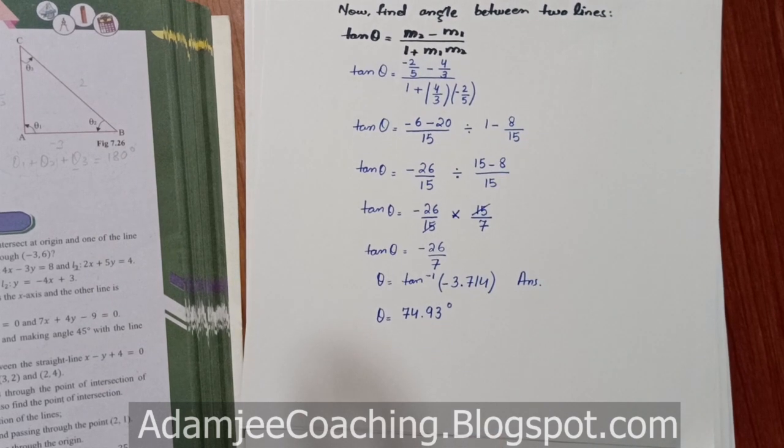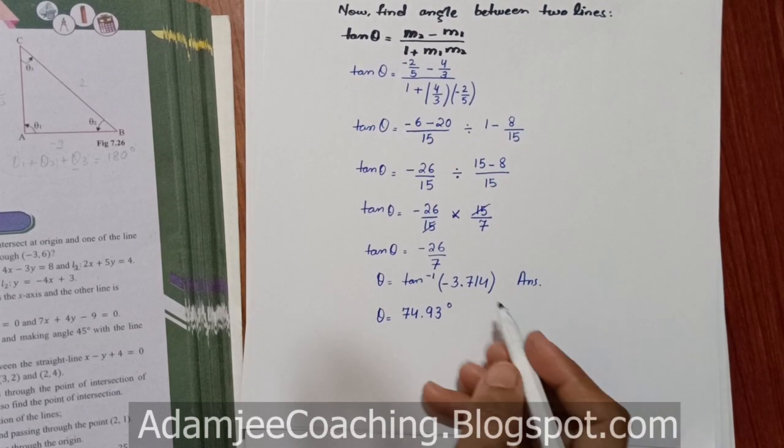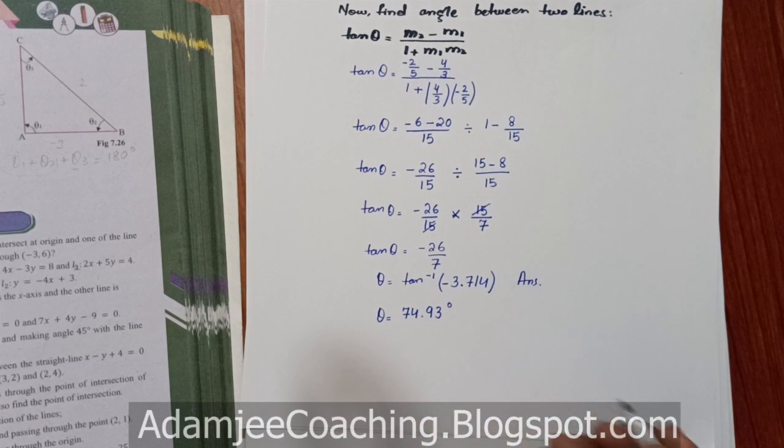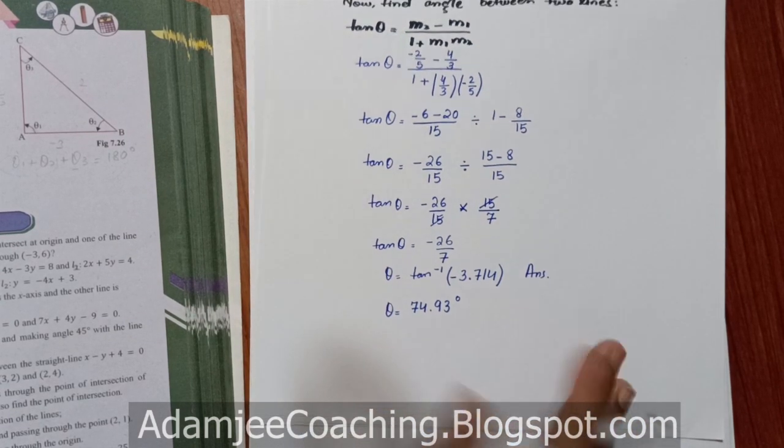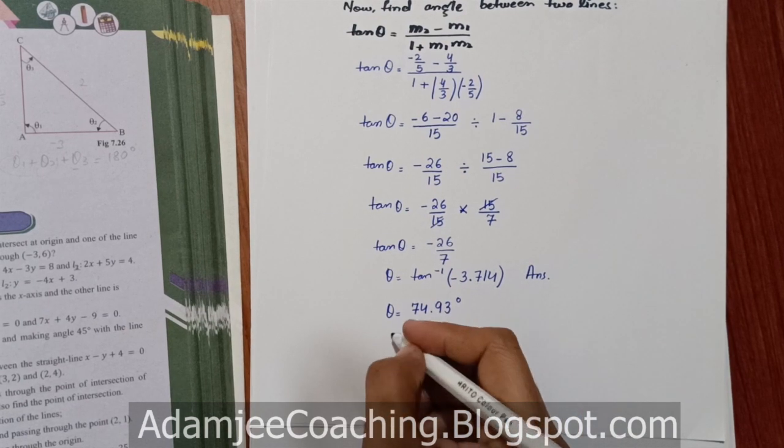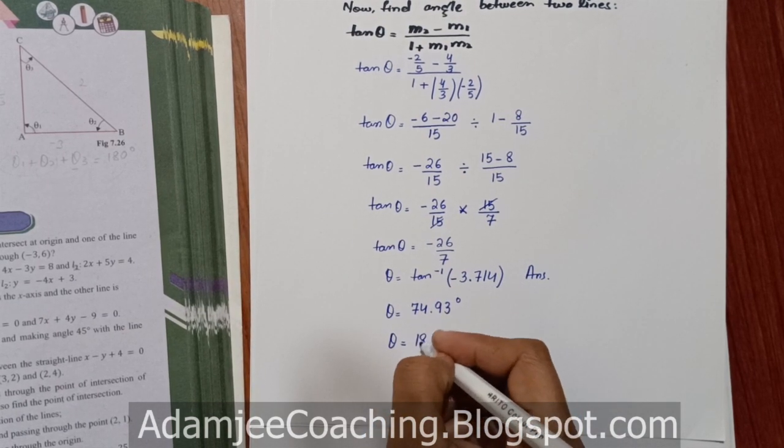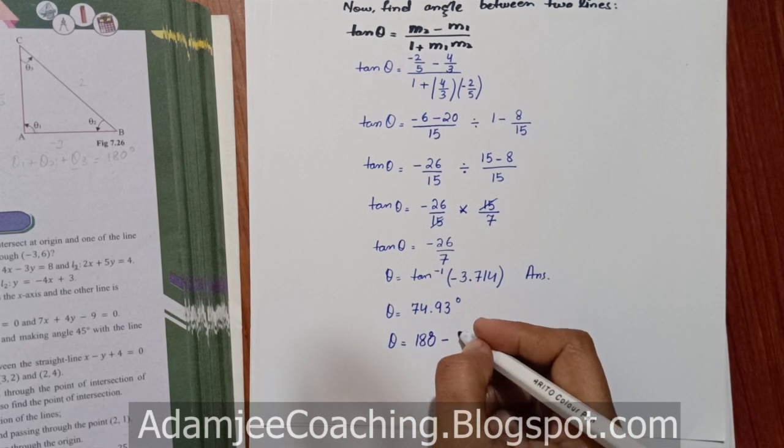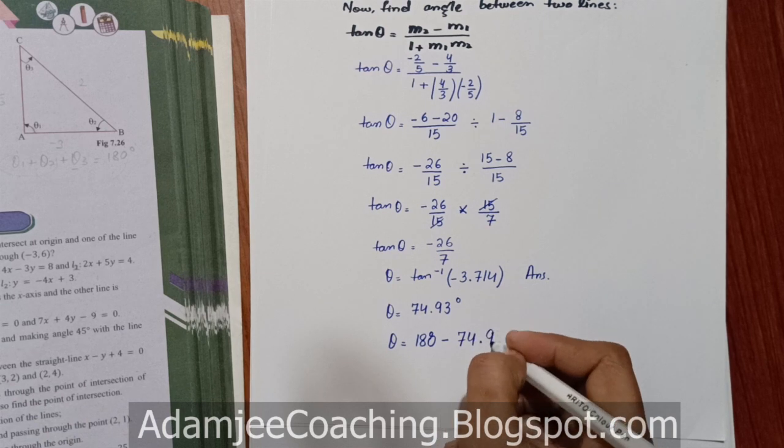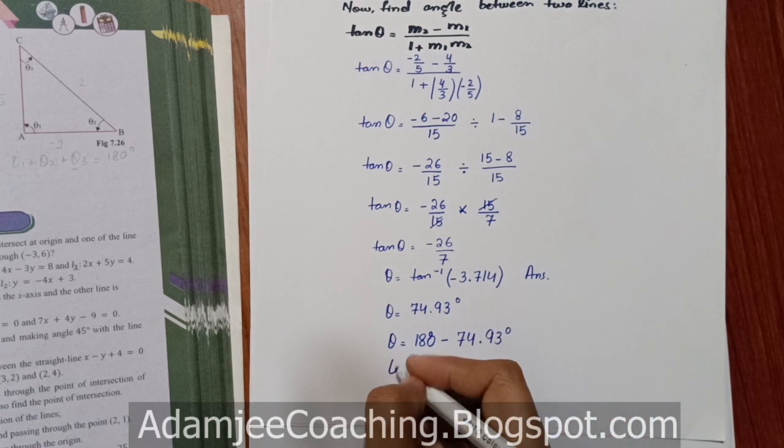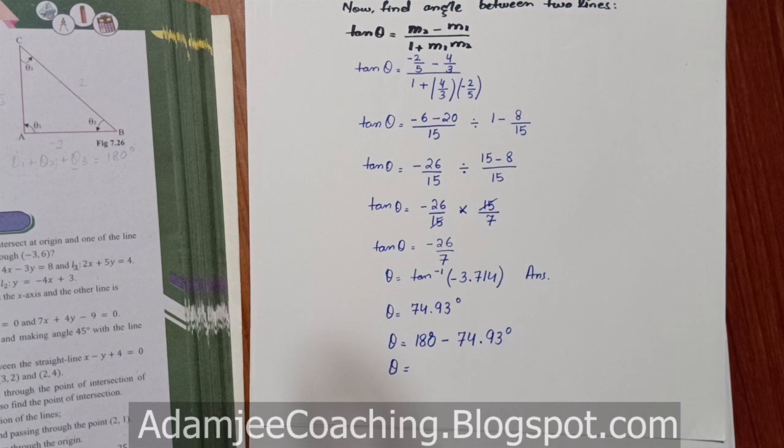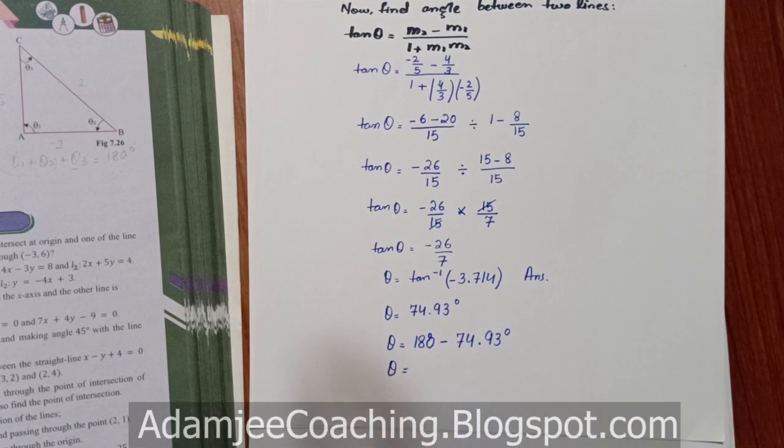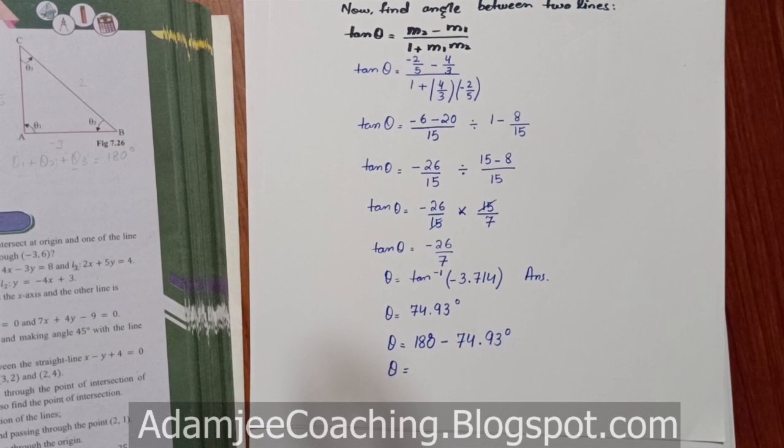Ab theta ki value jo hai wo yahan par negative aa rahi thi, hamara answer. Jab bhi negative aayega, to dekhen aapke paas jo angle hoga na wo obtuse hoga. Obtuse ki wajah se hum kya karenge, isko ab humne just minus karna hai 180 degree mein se. Aapke book mein itna detail mein answer nahi diya, aap chahein to is par jaake stop kar sakte hain 74.93 degree. To hum ise 180 se minus karenge, to hamare paas jo angle aayega wo angle hoga obtuse angle. Kyunki jab theta negative aayega to angle hoga obtuse, aur jab theta positive aayega to angle hoga acute.